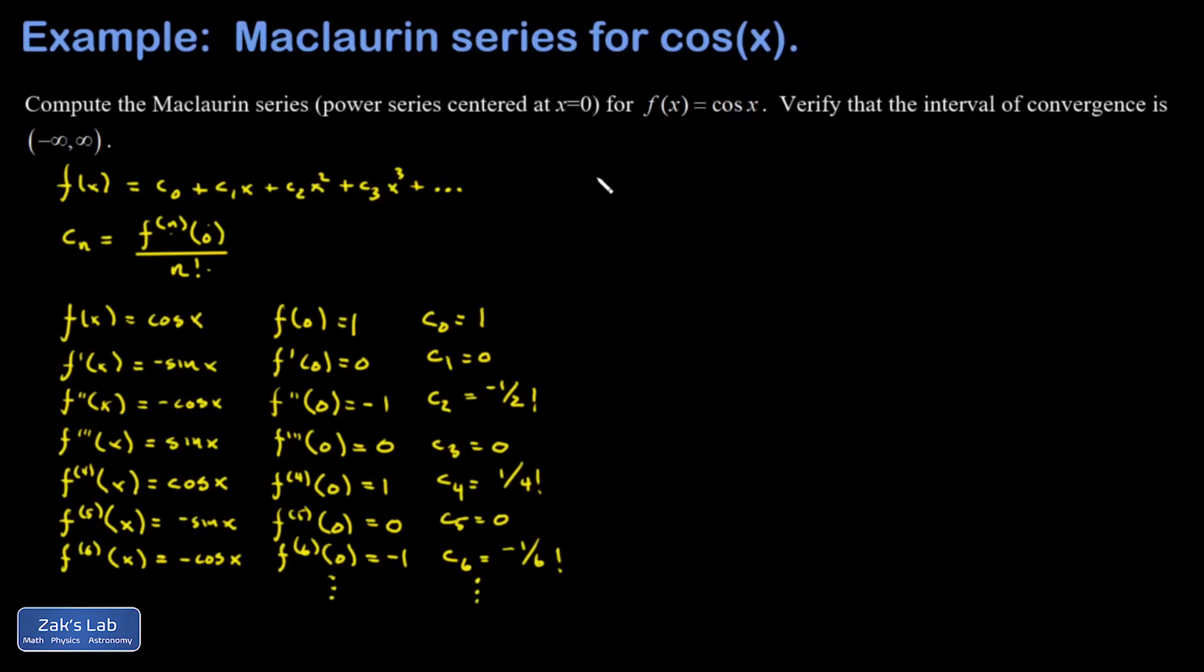So when I write the cosine function in expanded form it looks like one, and then all the odd terms vanish. c_2 is negative one over two factorial, so I have negative x squared over two factorial, then I have a plus x to the fourth over four factorial minus x to the sixth over six factorial plus dot dot dot.